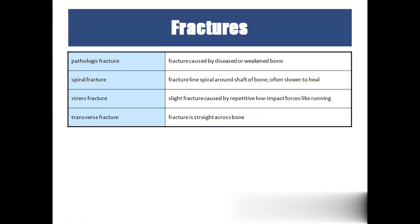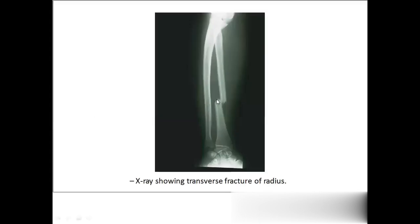Pathological fracture occurs when a fracture results from a disease such as bone cancer, osteoporosis, or osteomalacia. Spiral fracture has the fracture line in a spiral form. Stress fracture occurs with repetitive pressure on the bone at one point over time. Transverse fracture has a horizontal fracture line — a horizontal cut to the bone.